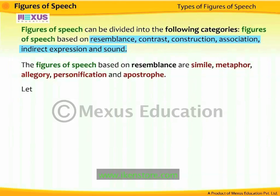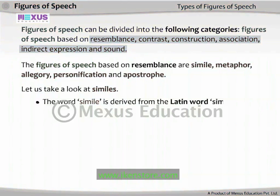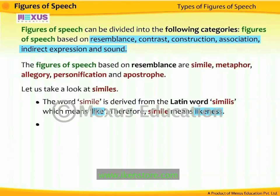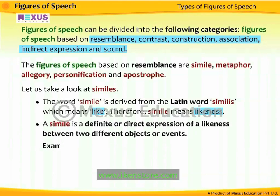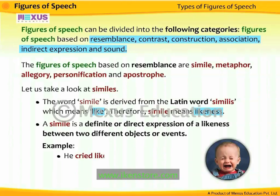Let us take a look at similes. The word simile is derived from the Latin word 'similis,' which means 'like.' Therefore, simile means likeness. A simile is a definite or direct expression of a likeness between two different objects or events. For example, 'he cried like a baby' — the person's action of crying is compared to the crying of a baby.